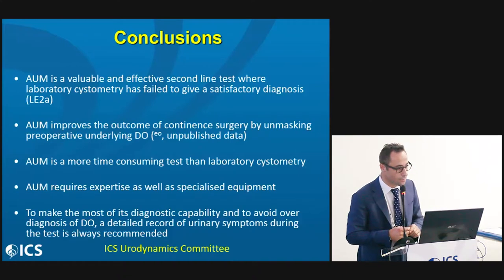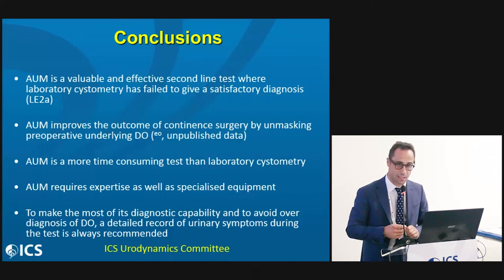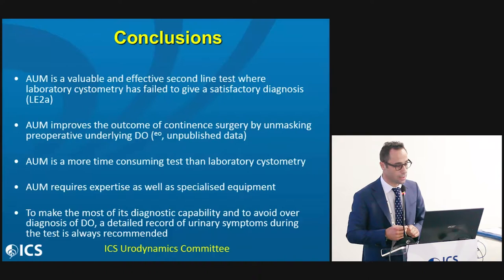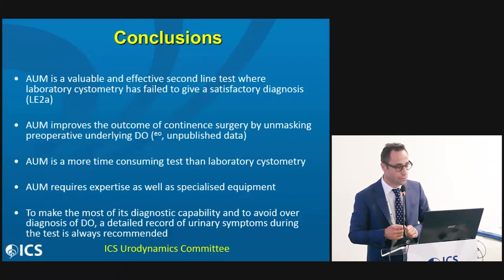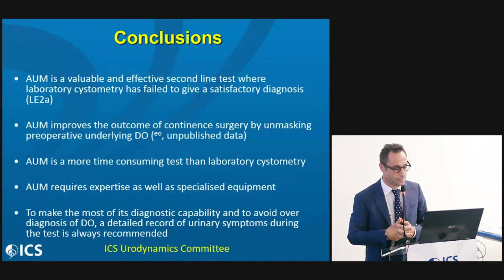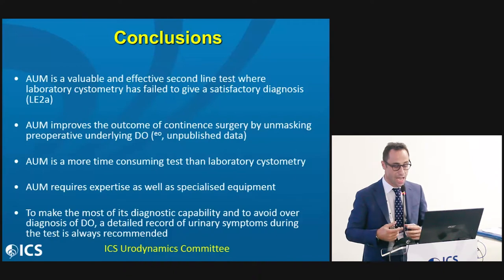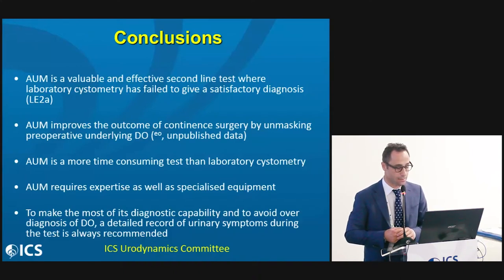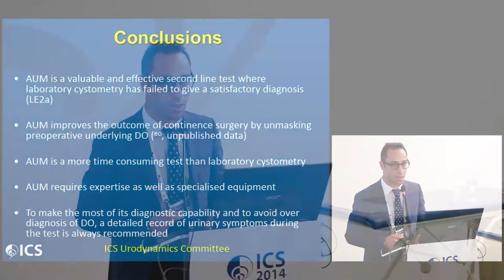In conclusion, AUM is a valuable and effective second-line test where laboratory urodynamics has failed to give a satisfactory diagnosis. Unpublished data have demonstrated that AUM might improve the outcome of continence surgery by unmasking preoperative underlying detrusor overactivity. However, it is a more time-consuming test requiring expertise and specialized equipment. Most importantly, to make the most of its diagnostic capability and to avoid over-diagnosis of detrusor overactivity, a detailed record of urinary symptoms during the test is always recommended.